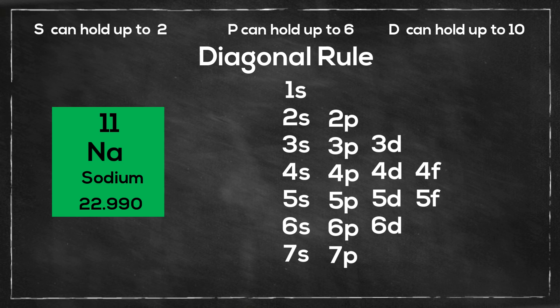I'll be using the diagonal rule, which works for almost every element in the periodic table, but there are exceptions, and I'll leave a list of those exceptions at the end of this video.